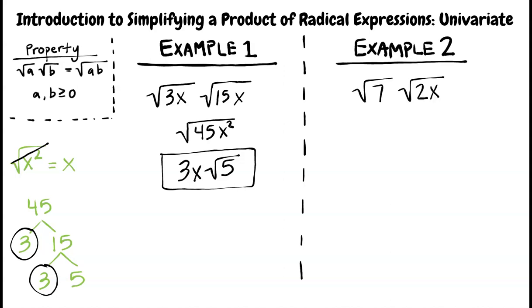Can you walk me through how to simplify the square root of 7 times the square root of 2x? Sure. First, we combine the two radicals into one expression using the product property. Then we simplify, but in this case, it is already in its most simplified form, so the final answer is the square root of 14 times x.